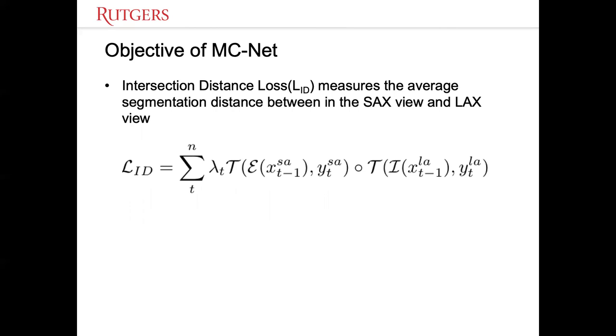D-U is the weight for each iteration. X-SA and X-LA denote the segmentation volume of short axis and long axis from the last iteration. Y-SA and Y-LA denote the offset prediction of the current iteration. Function T denotes spatial transform operation. Function E is the Euclidean distance map function.